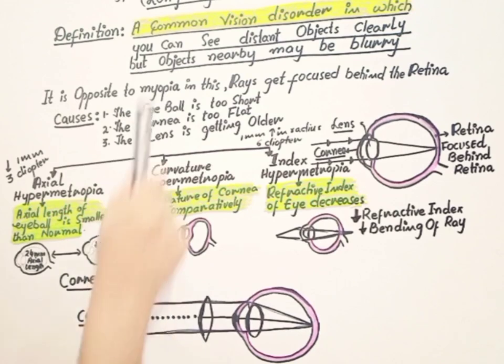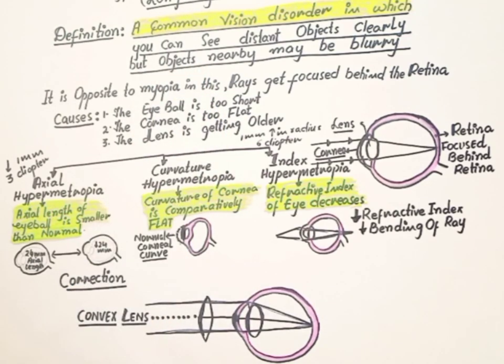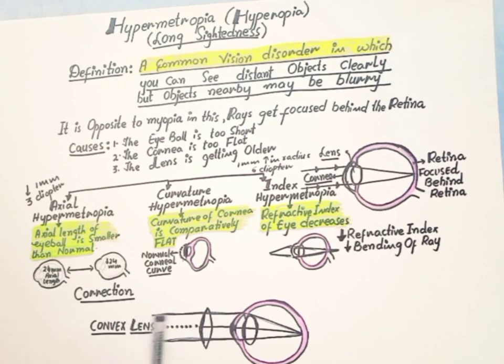These all conditions, this hypermetropia condition or farsightedness can be corrected by the use of convex lens. This convex lens captures the light rays and it will focus the light rays on the retinal wall.